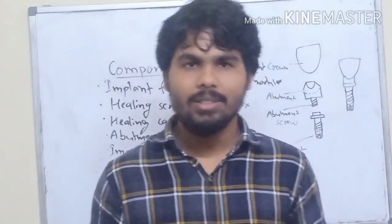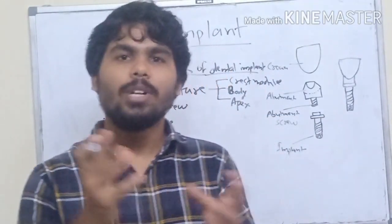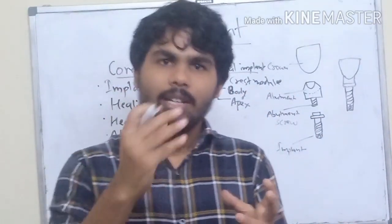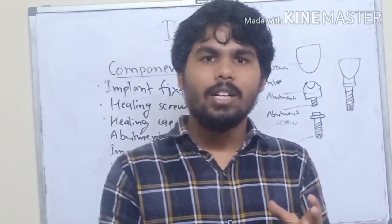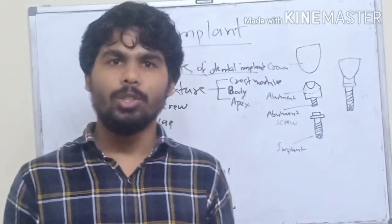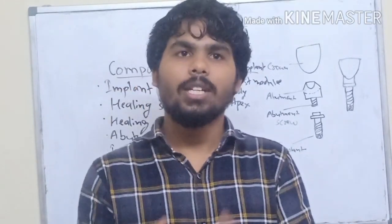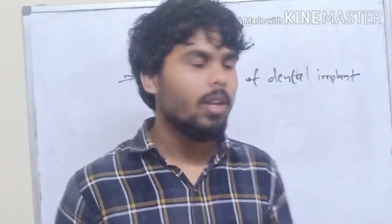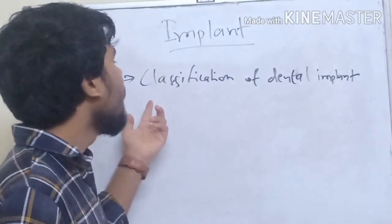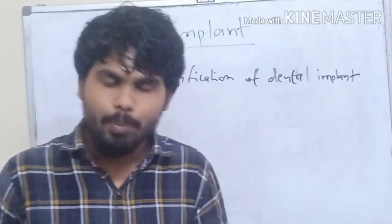Now, what do you mean by dental implant? A dental implant is a prosthetic device made of alloplastic material which is kept under the mucosa, under the periosteal layer, or inside the bone, and is used to retain and support removable or fixed prosthesis.